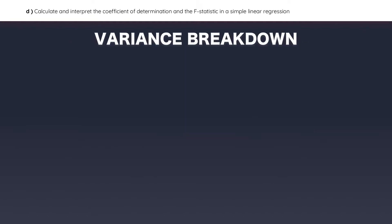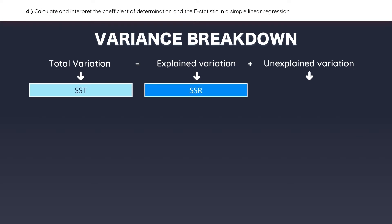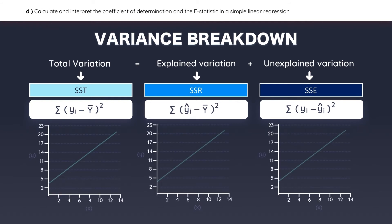Now let's look at the components of variance. The total variation is equal to the explained variation plus the unexplained variation. We can actually calculate each of these components. The total variation is known as the sum of squares total, explained variation is the sum of squares regression, and the unexplained variation is the sum of squares error. These are their formulas, but it's much easier to visualize the equation for each one.